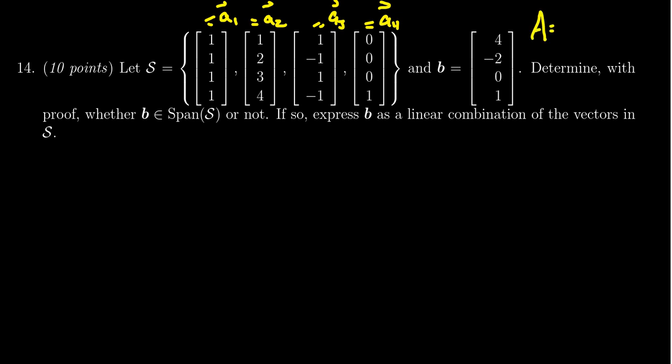I'm also going to define matrix A, whose column vectors are these four vectors in question, A1, A2, A3, and A4, like so.